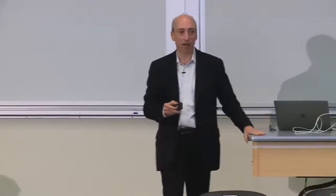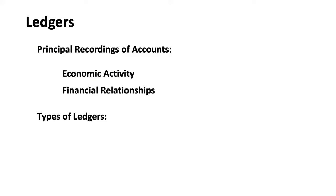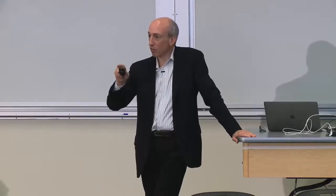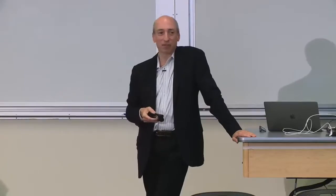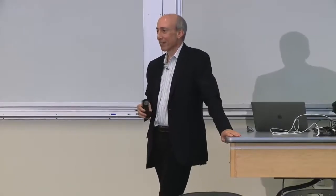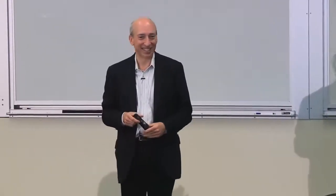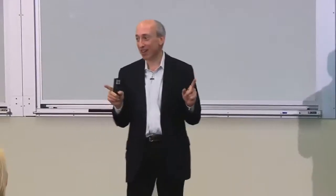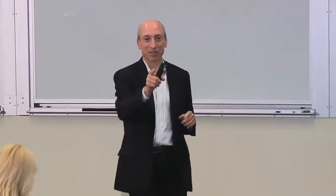Some types of ledgers: transactions versus balance. George Washington's ledger was a transaction ledger — just a list of sales and movements. Does anybody know the difference between a general ledger and a sub-ledger? Aviva, who is an accountant, explains: if there's a salary to be paid, there's a salary sub-ledger that also goes in the general ledger. If you want to see how much spent on salaries for the month, go to the salary sub-ledger. If you want overall movement of money, look at the general ledger.